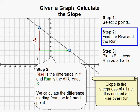The run is the difference in x. From this point to this point, we go over 6 spaces and that is 6.